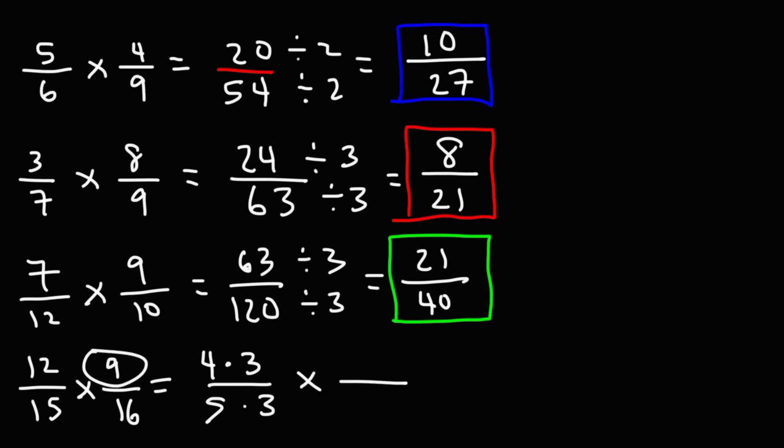9, we can write that as 3 times 3. And 16 can be rewritten as 4 times 4. So notice what we can do. We could cancel a 3. 3 divided by 3 is 1. And we can cancel a 4. 4 over 4 is 1.